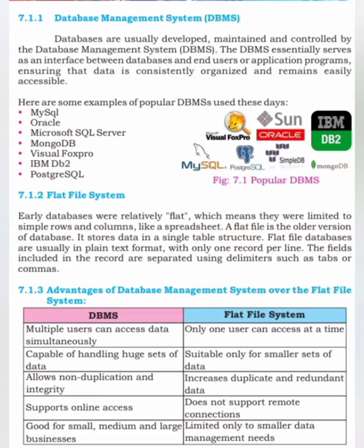Flat file system کیا ہے؟ Flat file system ایک ایسا system ہے جو ہم particularly کسی ایک single system کے لیے generate کرتے ہیں۔ یہ ایک ایسا system ہوتا ہے جس میں ایک ہی user اس چیز کو access کر سکتا ہے۔ ہم ایک table میں limited data کو rows and columns میں arrange کرتے ہیں — جیسا کہ spreadsheets بنا لیتے ہیں، جیسے Excel پہ sheets بناتے ہیں — وہ flat file system ہوتی ہیں، جس میں ایک وقت میں ایک ہی user data access کر سکتا ہے۔